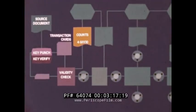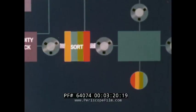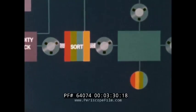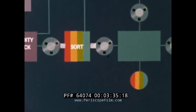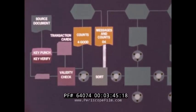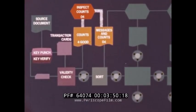Because we're dealing with a sequential file, the good transactions must be sorted into the same sequence as the master file. For example, if our transactions are employee time cards, we might sort them into employee number sequence. When the sort is complete, it produces messages and counts, which must be manually inspected and compared to the validity check run to be sure that nothing has gone wrong.